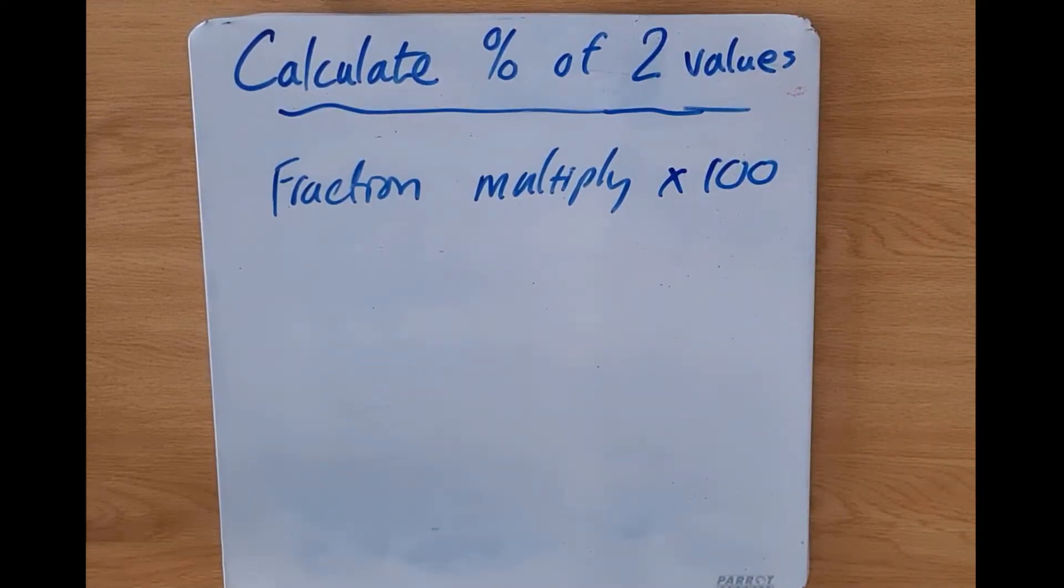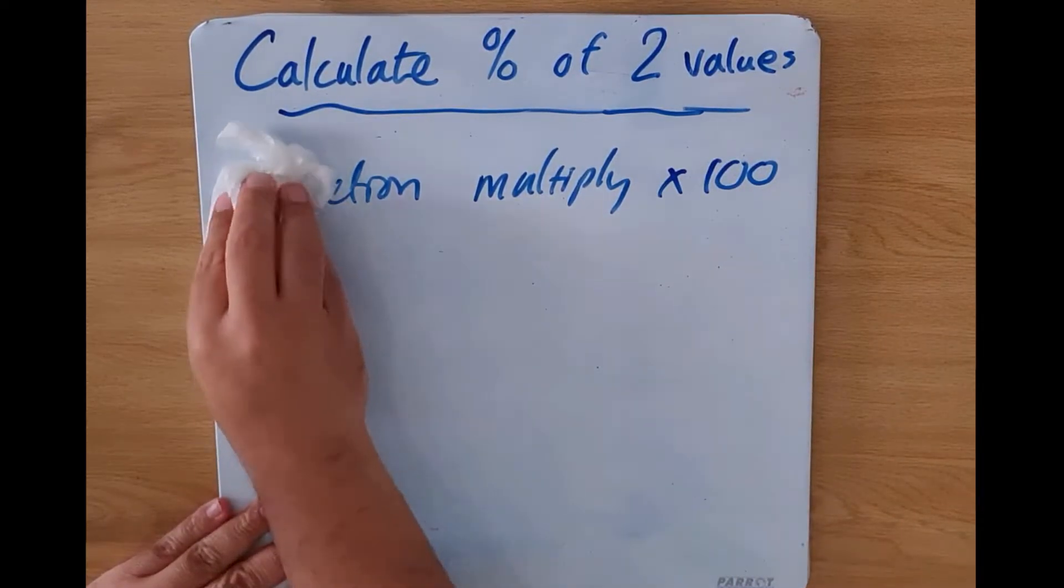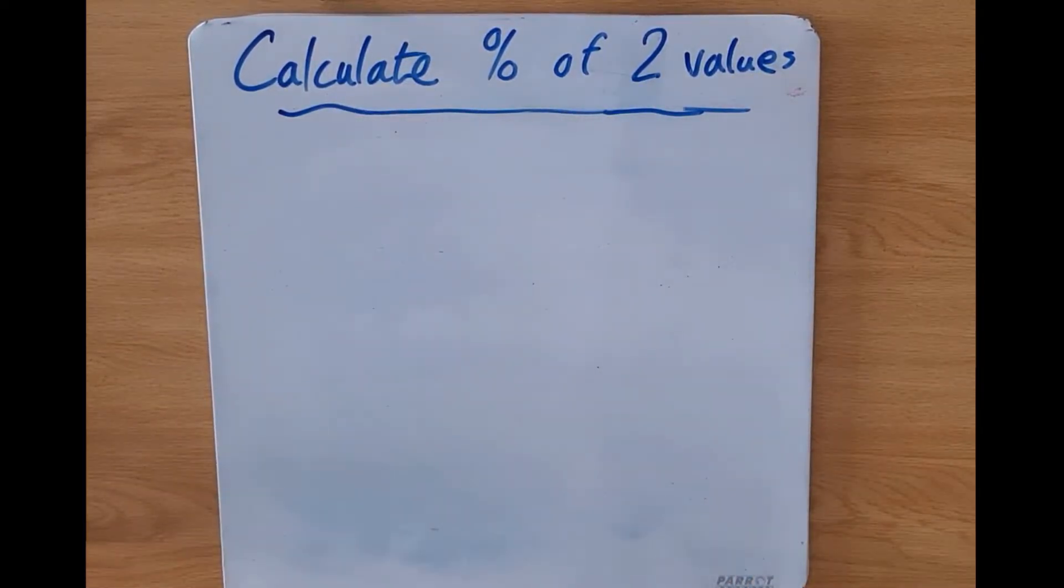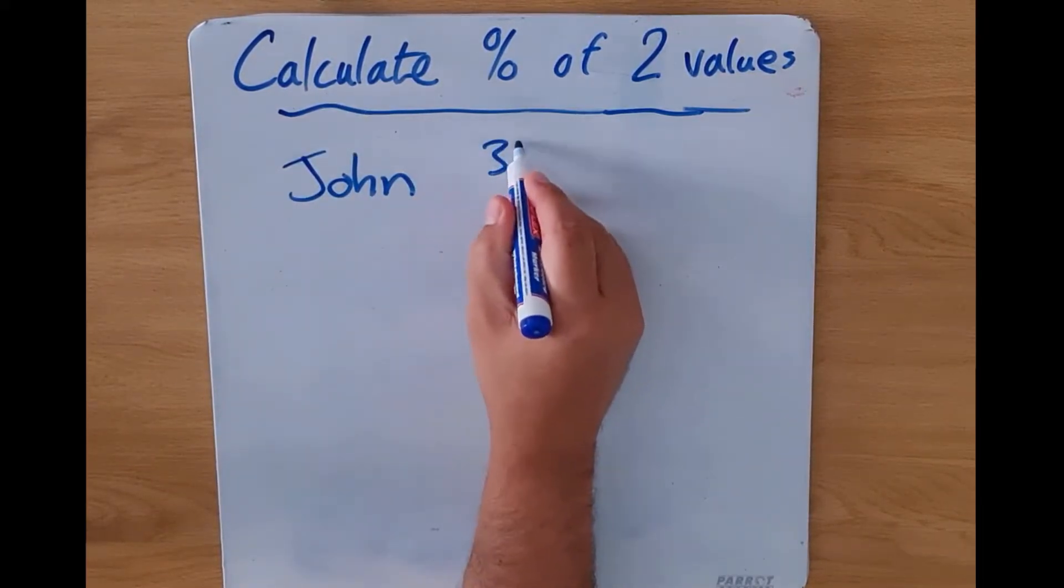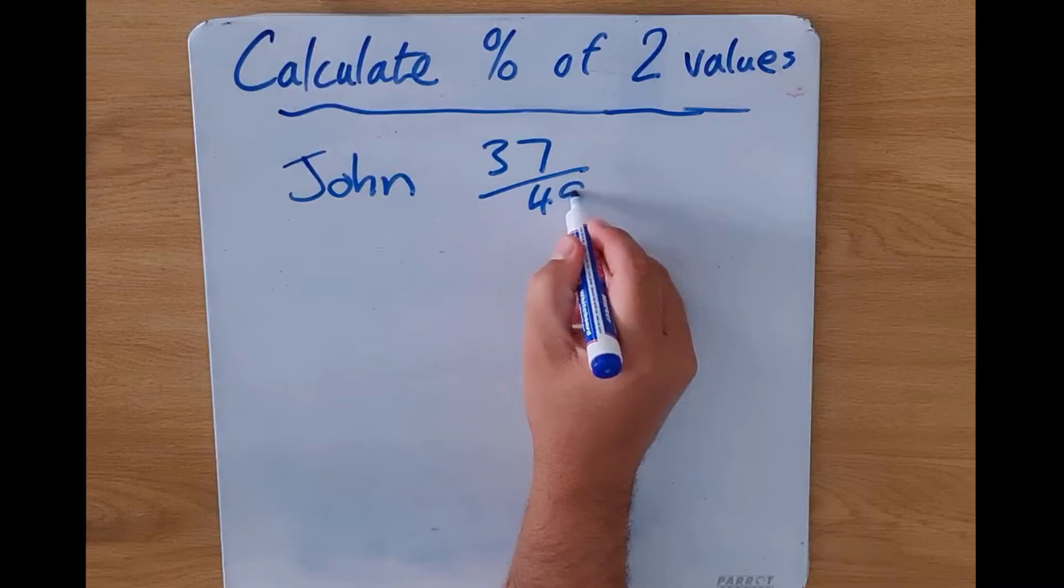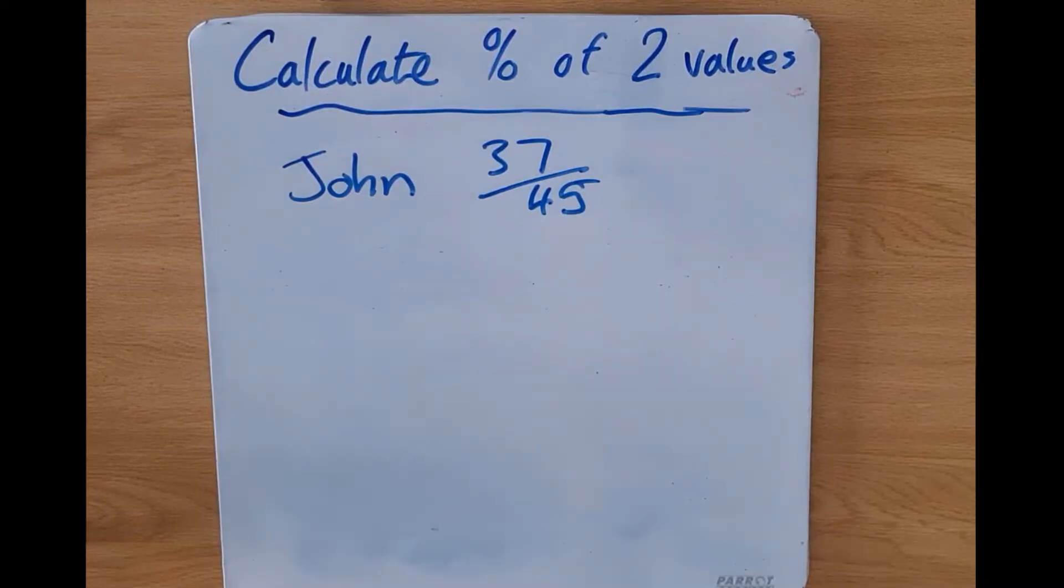Okay, so let's look at a scenario. So they tell us that the highest mark John received was 37 out of 45. What would his mark be as a percentage?